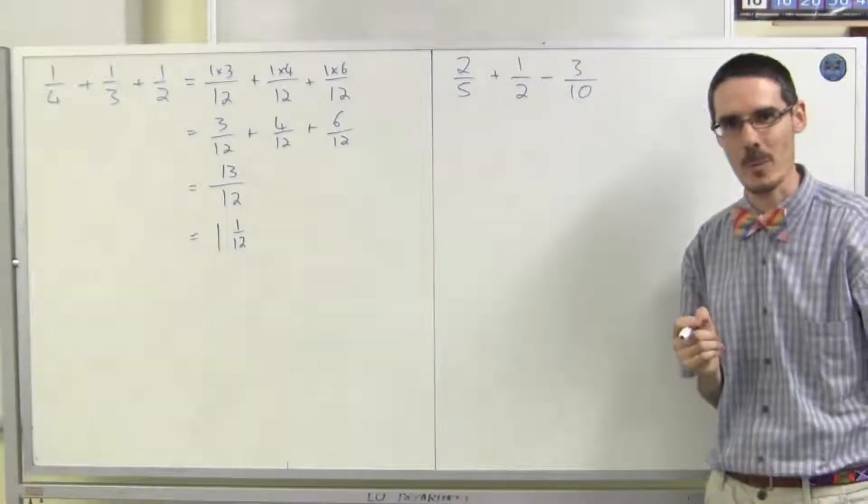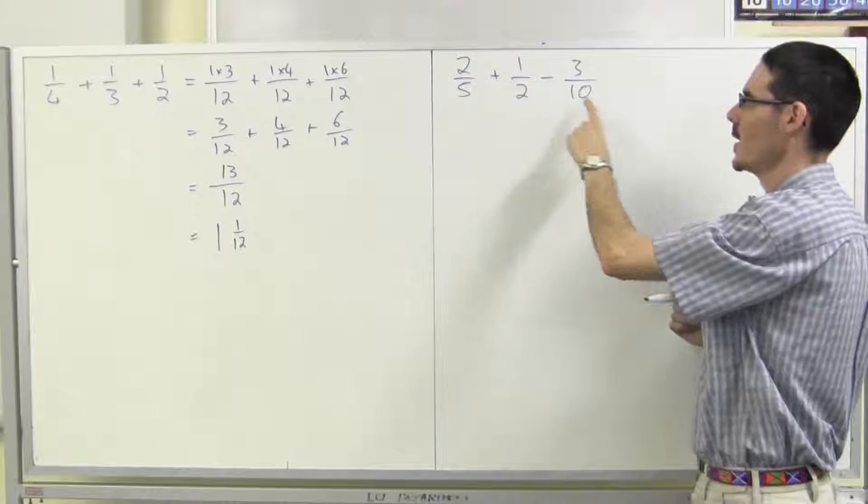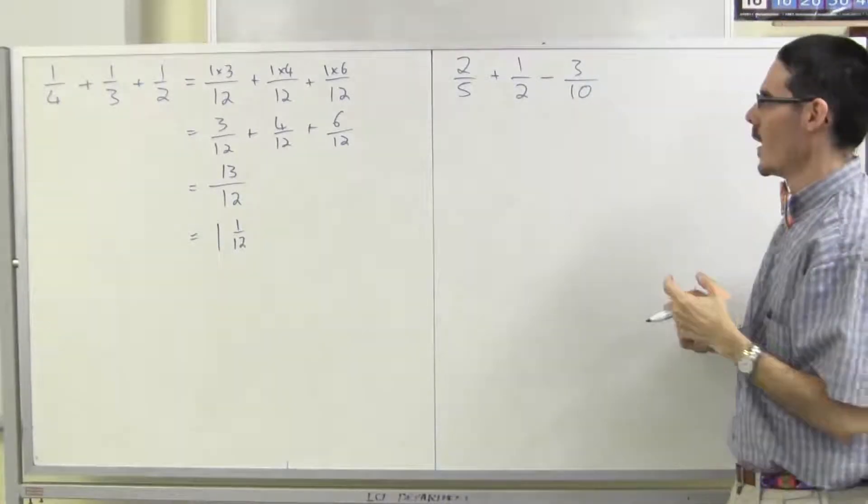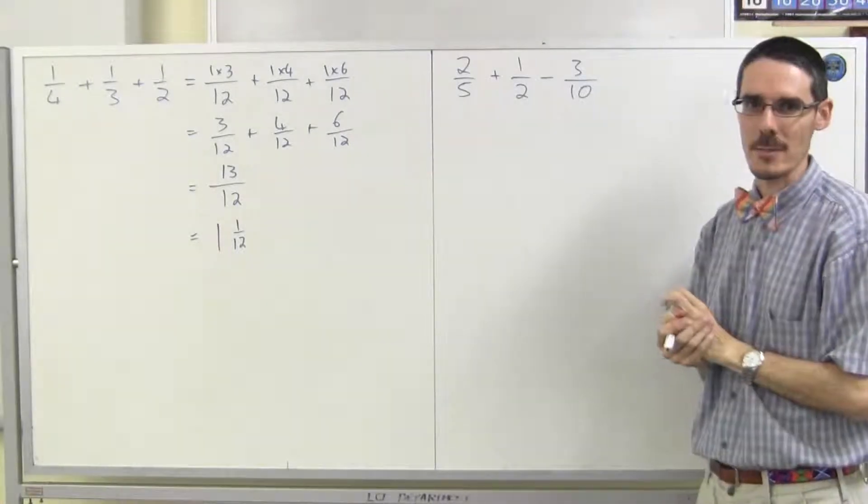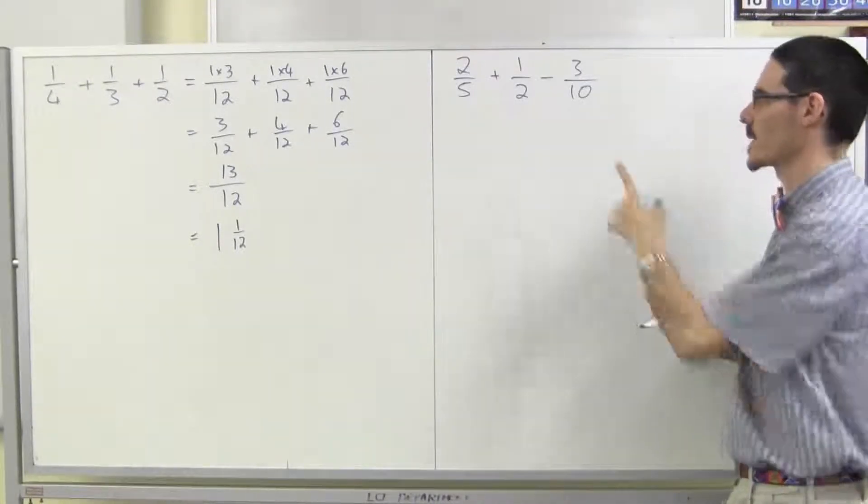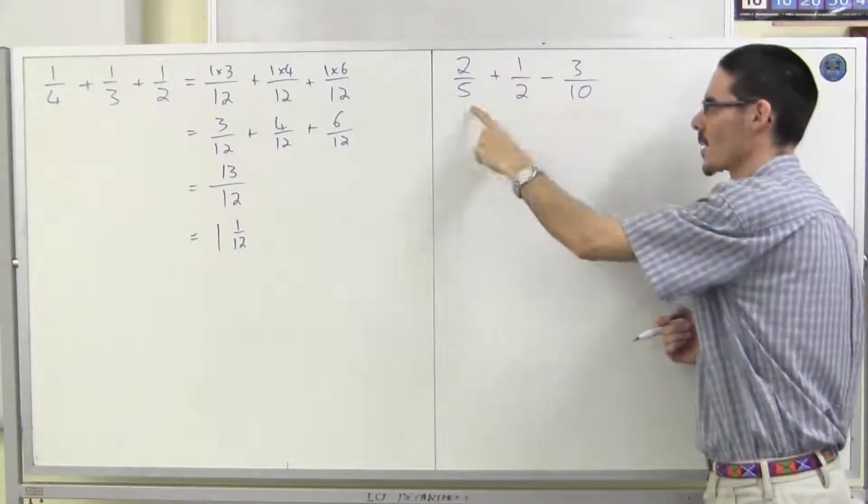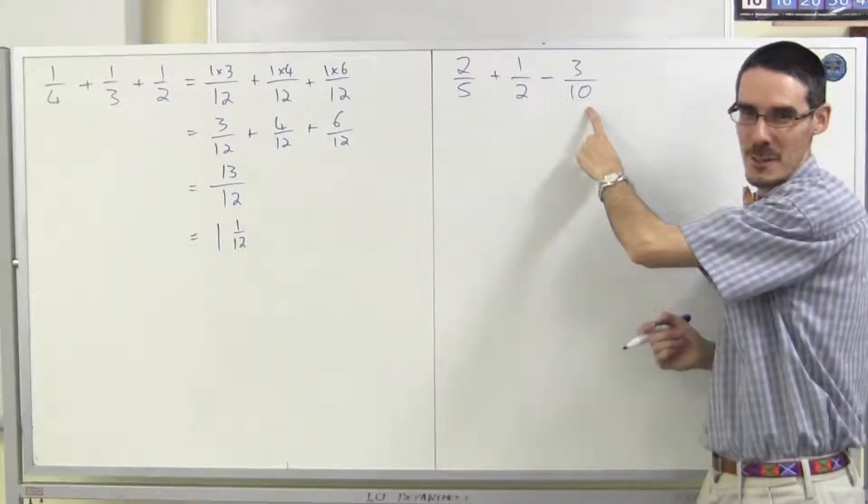Okay, another example. 2 fifths plus 1 half minus 3 tenths. Let's have a look. I need 1 number on the bottom that all of them will divide into. Well start with the biggest number you see. Does 10 work? 5 goes into 10 and 2 goes into 10, so 10 itself is going to work.